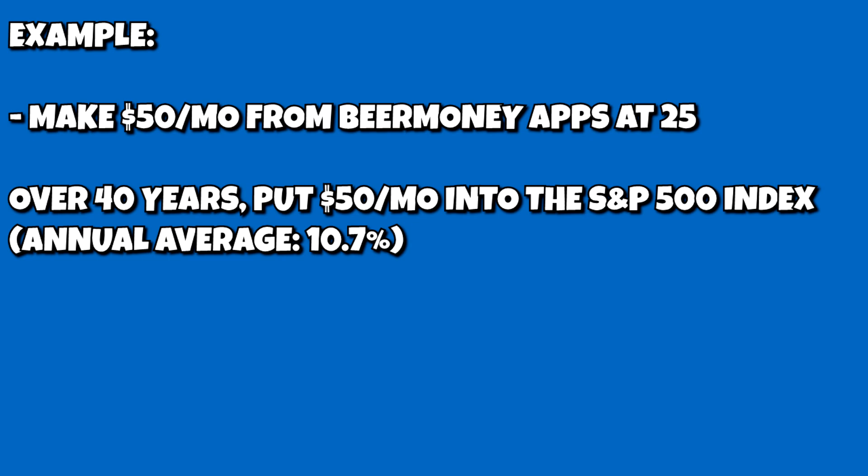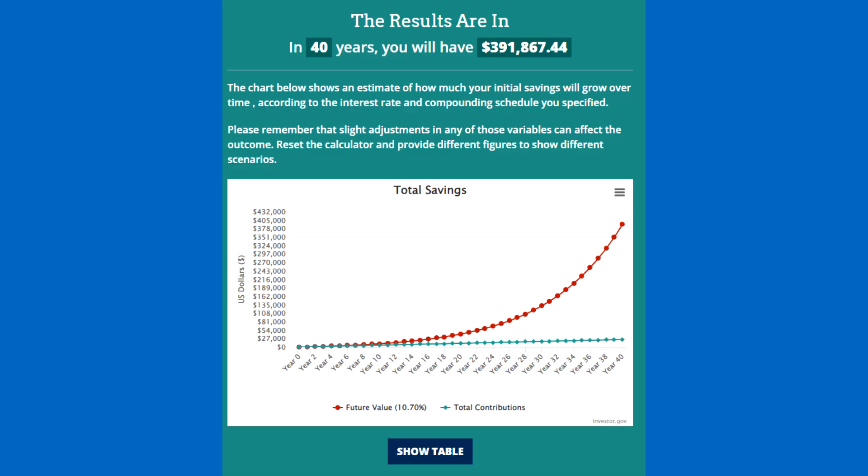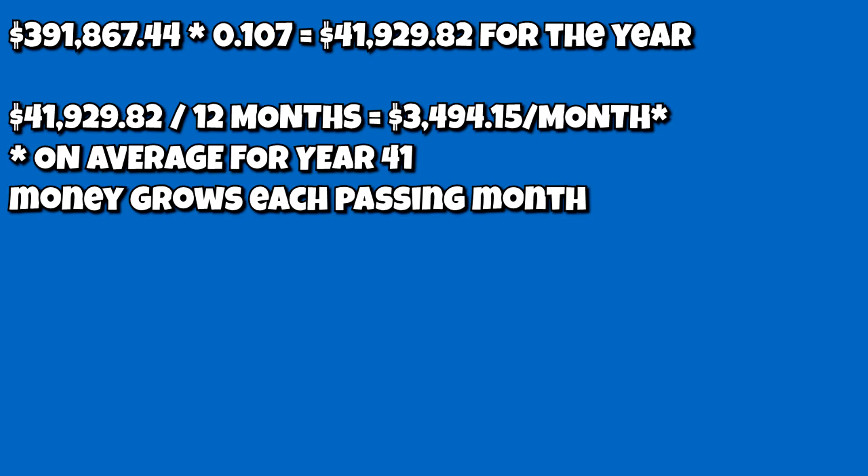Let's do just the S&P 500 index fund — that is 10.7%, which is the average growth the S&P 500 has had since it was introduced in 1957. Assuming this also counts reinvesting the dividends, that number is now $391,867.44, and the amount you make the next month is $3,494.15. In the year 2064, that might not quite be enough to cover monthly retirement expenses, but it would take care of a very nice chunk of it. $391,000 will definitely help.